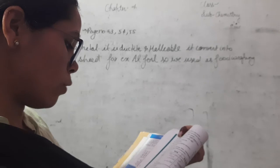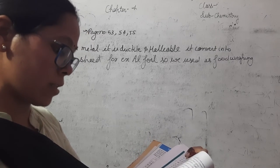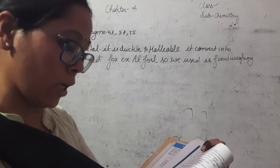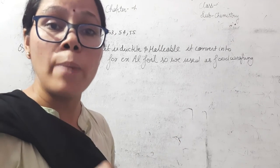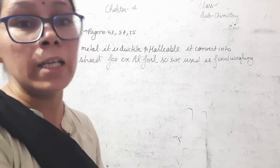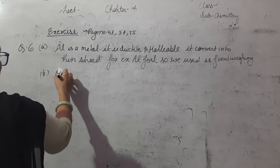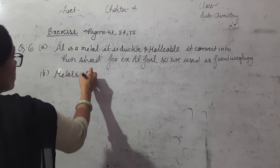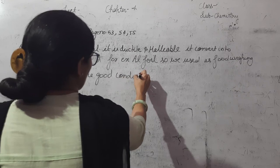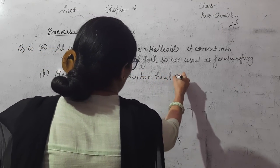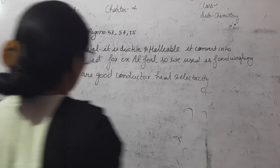Next one is immersion rod for heating liquids are made up of metallic substance. Because metals are good conductor of heat and electricity.